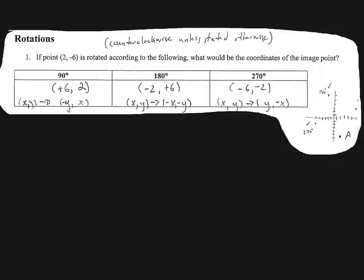180 degrees, they stay in the same order. x, y goes to opposite x, opposite of y. So they stay in the same order as they are here, but both of their signs change. 2 was positive, now it's negative. 6 was negative, now it's positive. And the 270, very similar to the 90 in terms of they're going to flip-flop order, and the second number, after you flip-flop their order, will change signs. So the negative 6 goes to the front, the 2 goes to the back, and the 2 changes to a negative.